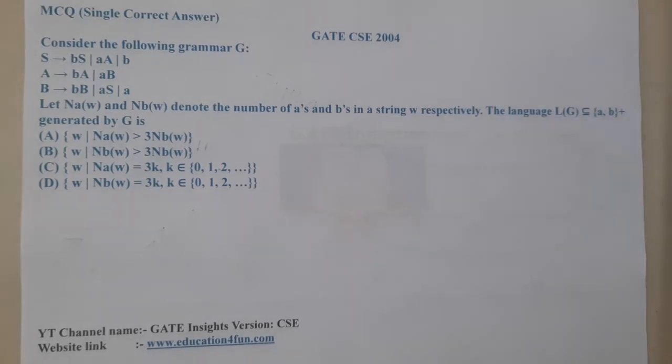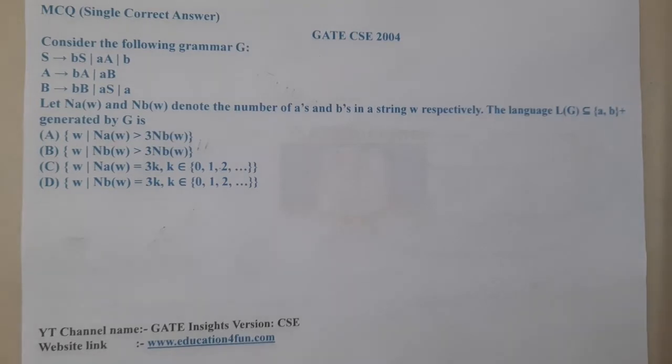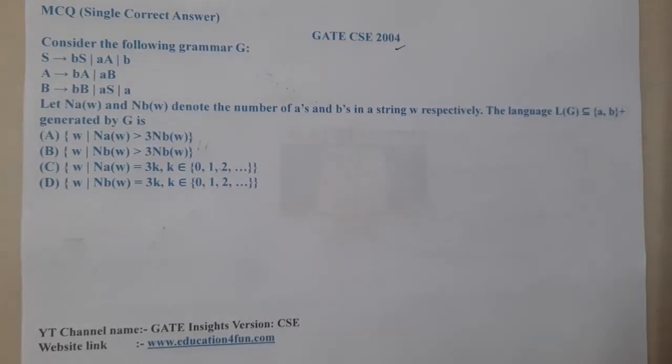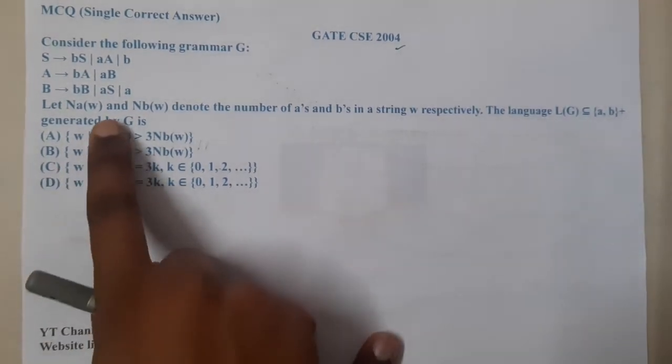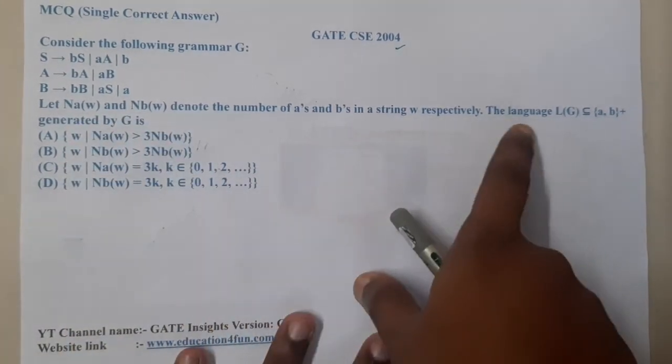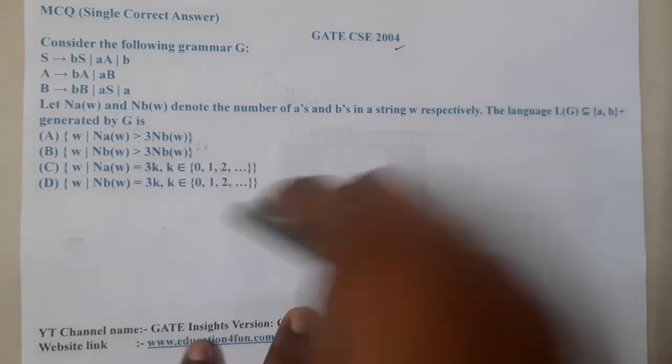Hello guys, we are back with our next lecture. In this lecture let us go through the next question. This question belongs to GATE CSE 2004. The given question is: consider the following grammar. They gave a particular grammar and now they are saying let Na(w) and Nb(w) denote the number of a's and number of b's in the string w.